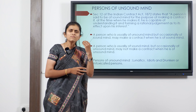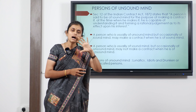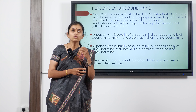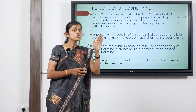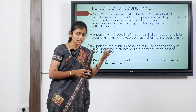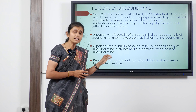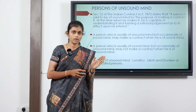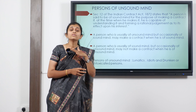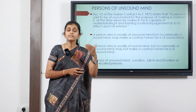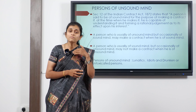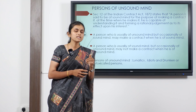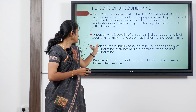Persons classified as having unsound mind include lunatics, idiots, and drunken or intoxicated persons. Lunatics are those who, due to psychological issues, have a partially sane and partially insane mind. When a lunatic enters into a contract while of sane mind, the contract holds good; when entered into while of insane mind, it is void. Idiots, unlike lunatics, are permanently not of sound mind — they cannot make any rational judgment and any contract entered into by an idiot is void ab initio.